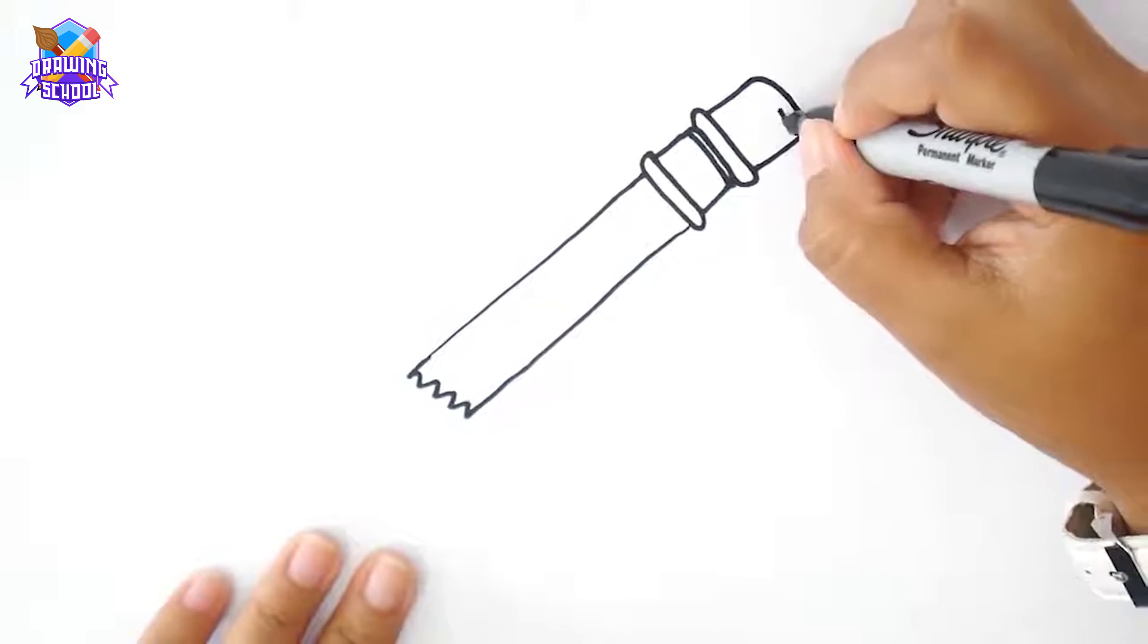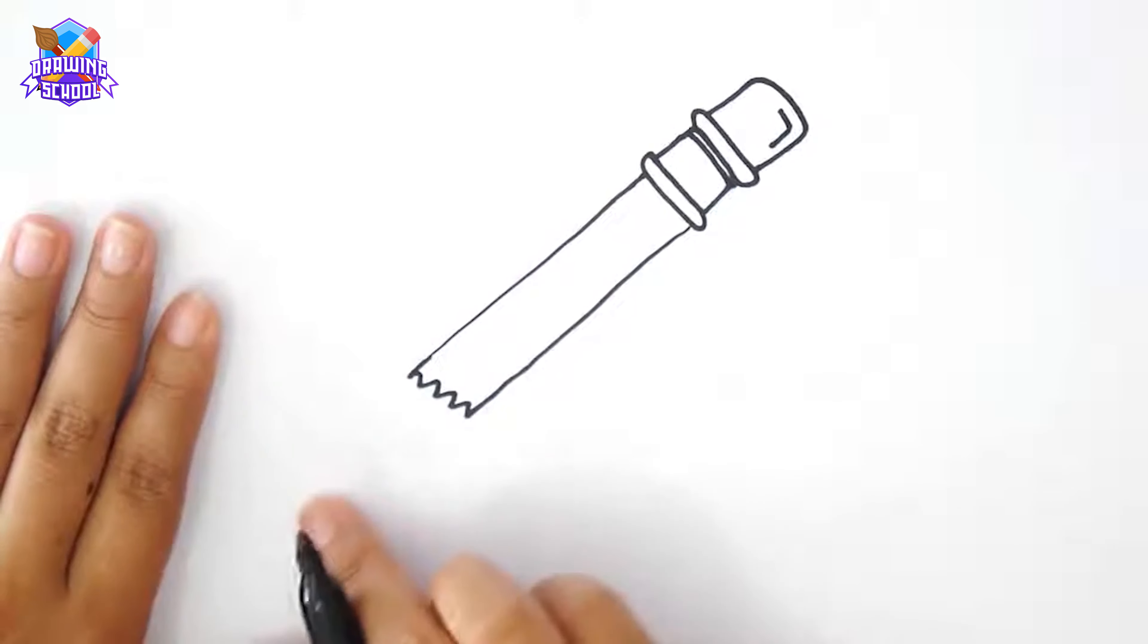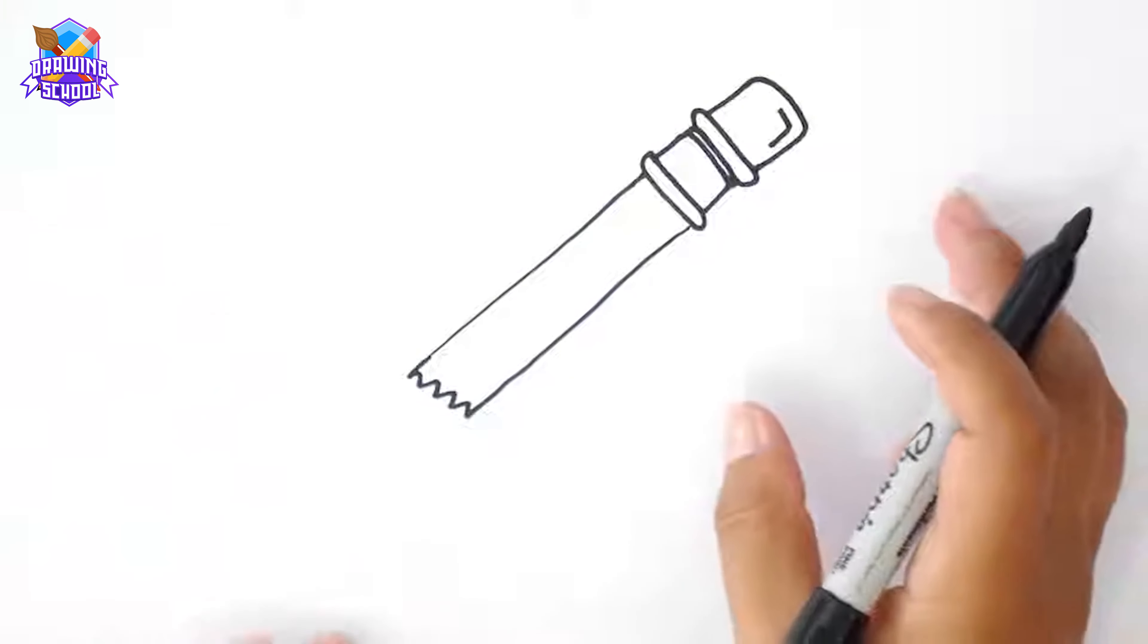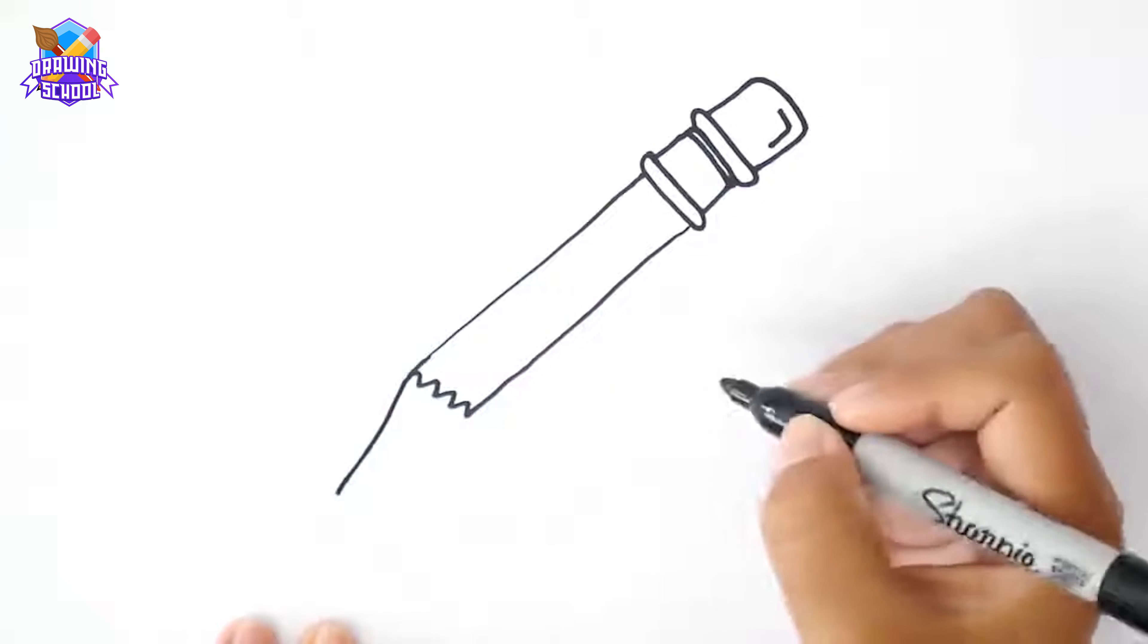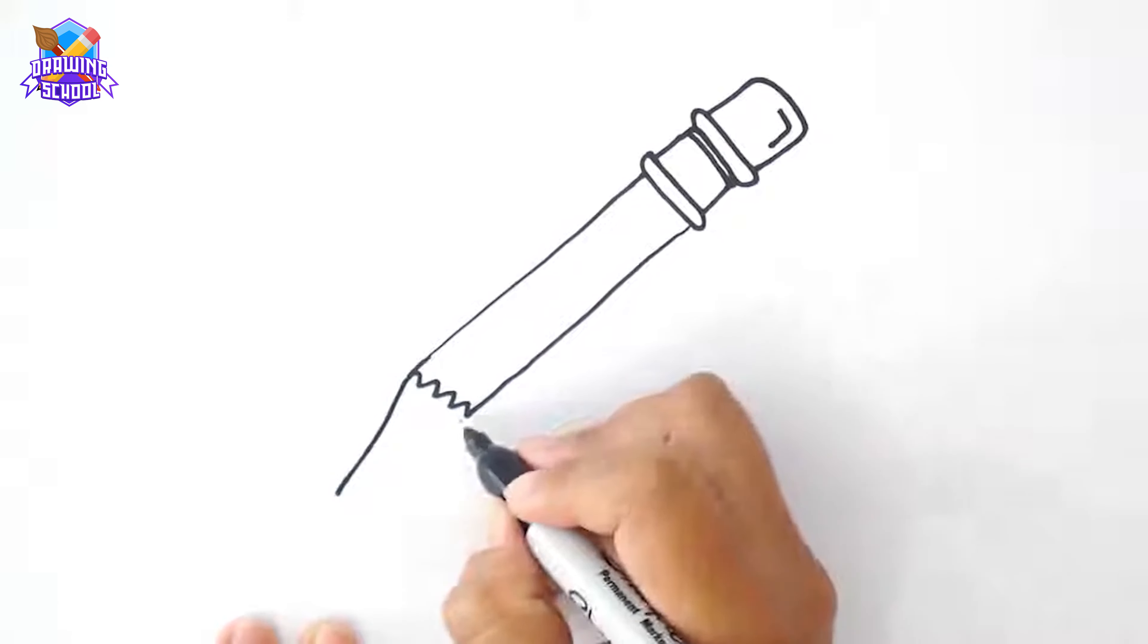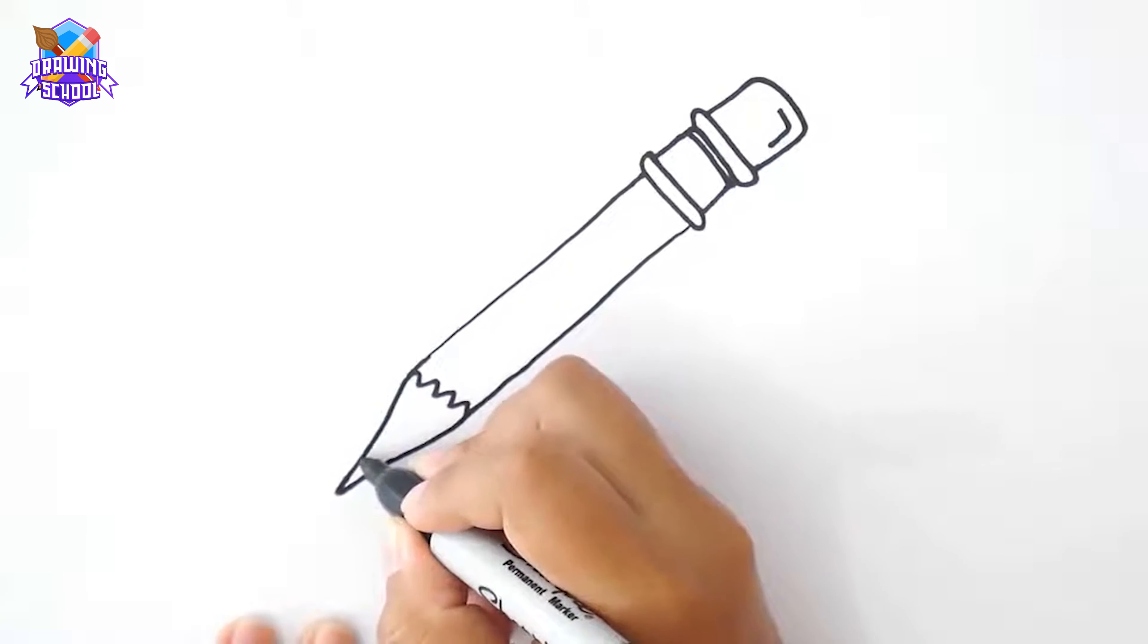You can add some little details too. Now we draw a big V shape in here, and a straight line on the tip for the pencil lead.